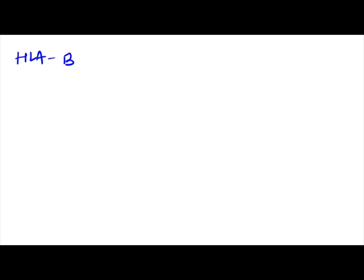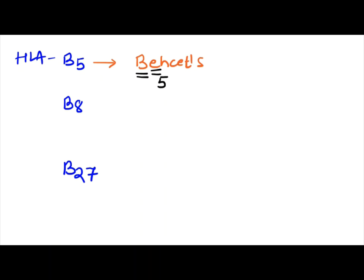In HLA subtypes, we start with HLA-B. We have HLA-B5, HLA-B8, and HLA-B27. B5 is associated with Behçet's disease. How do we remember that? B-E is alphabet number 5, so Behçet's is B5, or more specifically B51. Remember the B51/B5 association.